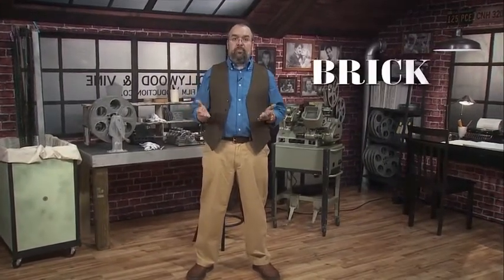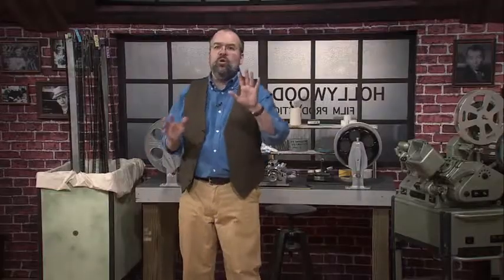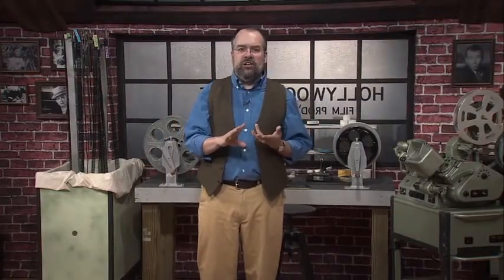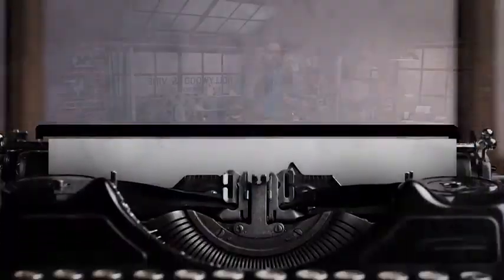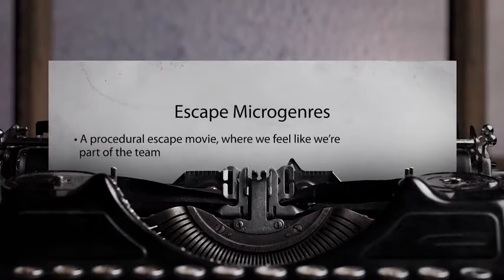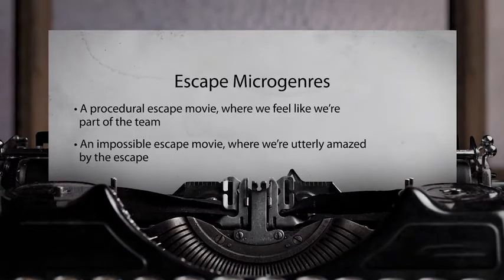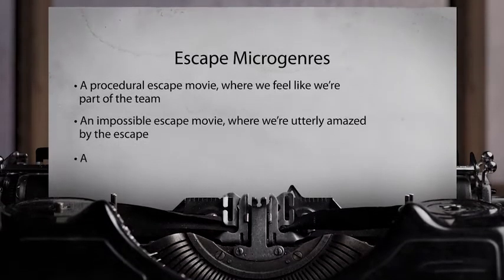Pulp mysteries are more about a hard-boiled world than a hard-boiled person. A modern example of this micro would be the grossly under-recognized film Brick, released in 2005. I could go on and on — with 50 macro-genres and each macro having an average of 4 micros, sometimes more, that's over 200 micro-genres we could discuss. But let me do one more, which will loop us back to super-genres. Let's look briefly at the escape macro-genre. Like the heist movie, there are four micro-genres: a procedural escape movie where we feel like we're part of the team; an impossible escape movie where we're utterly amazed by the escape; and a tale of escape movie where we're entranced by the personal sacrifice. But there's a fourth micro — the non-prison escape movie.